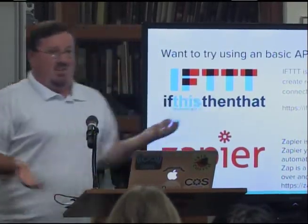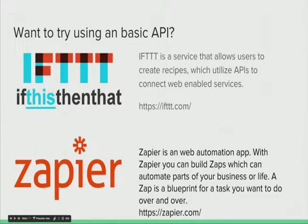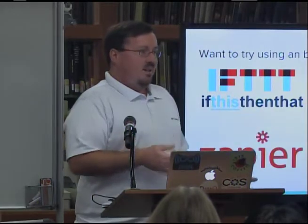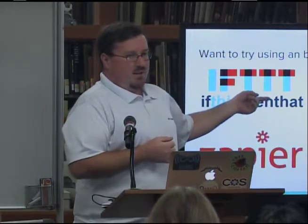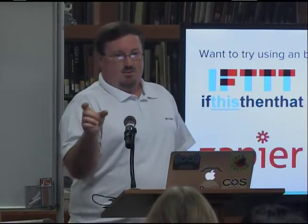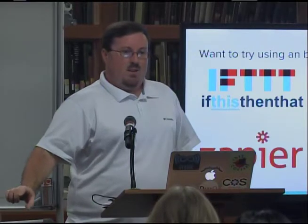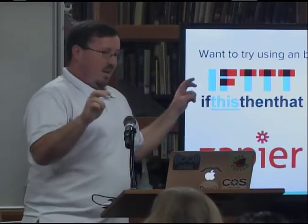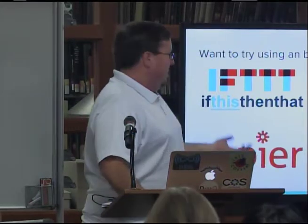If you're interested in using APIs, there are a couple of services out there — sort of an if-then statement approach. You can use these providers and design recipes with really basic commands to integrate different services. For example, if I get an email from Gmail with a document attached, and I prefer Dropbox over Google Drive, you can set a recipe to monitor your Gmail and sync the attached document to Dropbox — even though Dropbox doesn't normally talk to Google.